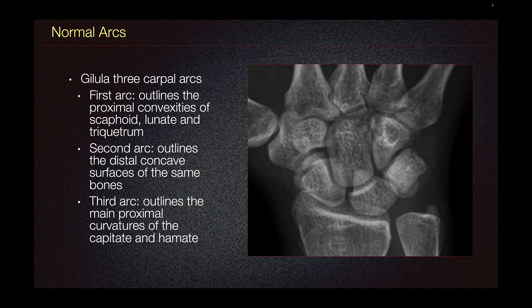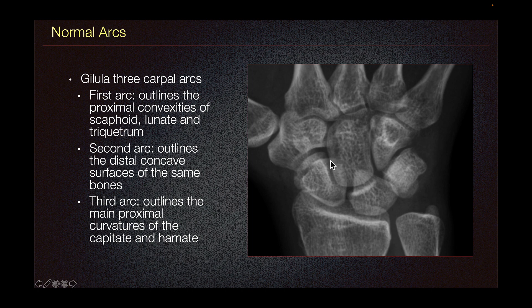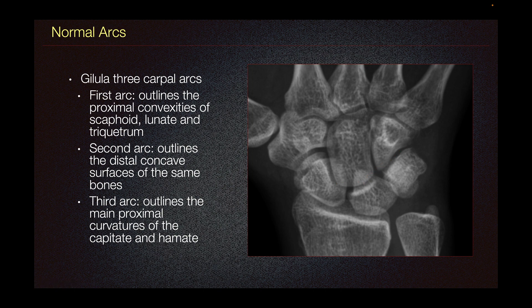The normal arcs that we talk about in the wrist are the Gilula carpal arcs. The first arc outlines the proximal convexities of the scaphoid all the way to the lunate and then to the triquetrum. The second arc outlines the distal concave surfaces of the same bones, from the scaphoid all the way to the triquetrum. The third arc outlines the proximal curvatures of the capitate and also the hamate. We use these arcs to evaluate for any incongruency that could suggest dislocation.